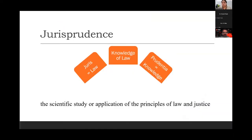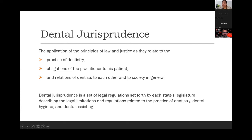First of all, let us look at jurisprudence. 'Juris' basically means law, and 'prudentia' means knowledge. So the word jurisprudence is basically knowledge of law — it is the scientific study or application of the principles of law and justice. Dental jurisprudence is the application of the principles of law and justice as they relate to the practice of dentistry, the obligations of the practitioner to the patient, and the relationship of dentists to each other and to the community or society in general.